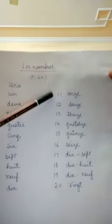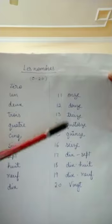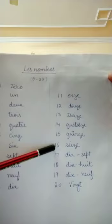Now from 11 to 20. From 11 to 16, one can easily see there is a common ending of ze, so it's easy to remember.